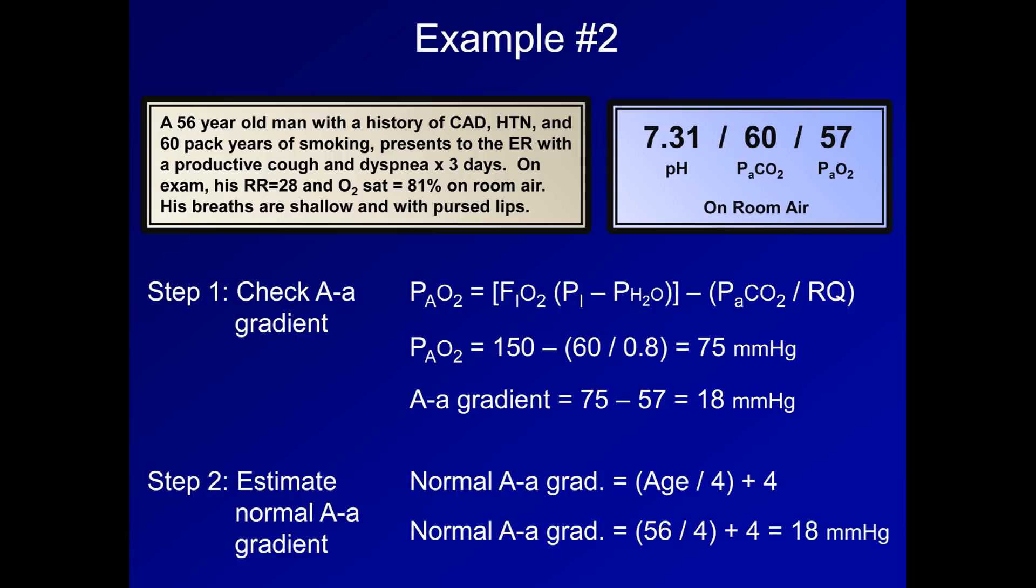So his current AA gradient is equal to his normal AA gradient for his age. What does this mean? This means that the cause of his hypoxemia must be solely hypoventilation. This is an important result when we consider the differential diagnosis of his overall presentation.